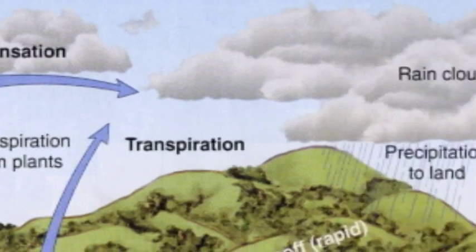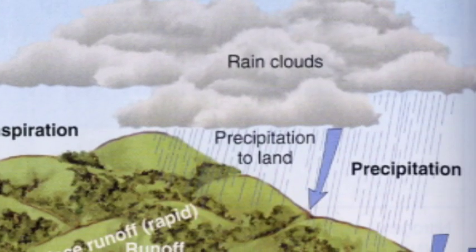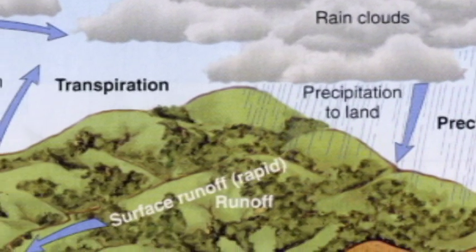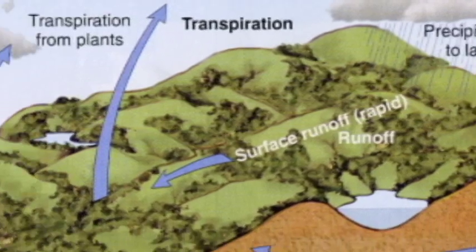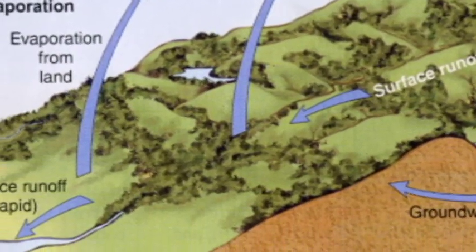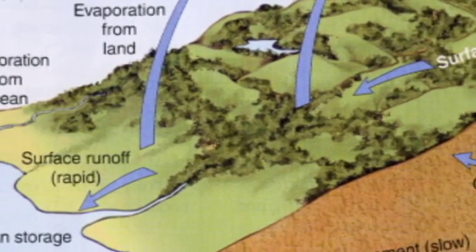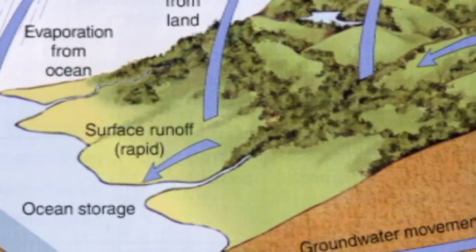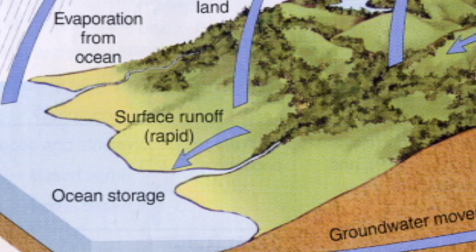Then, precipitation occurs as rain, sleet, hail, or snow. Most of the precipitation becomes surface runoff, flowing back into streams and lakes, which eventually carry water back to the oceans to start the cycle over.